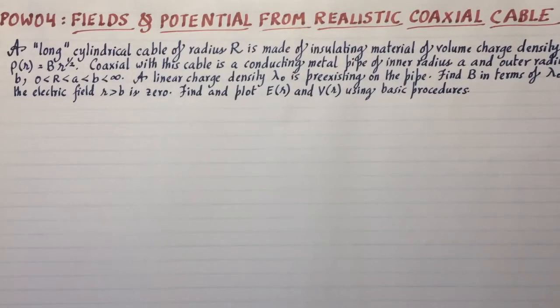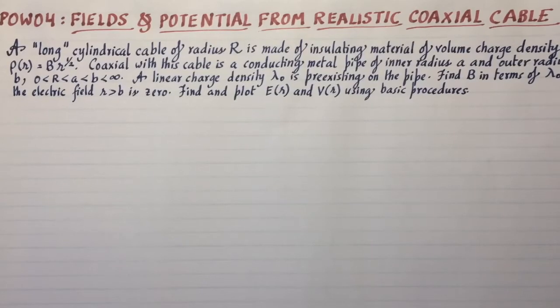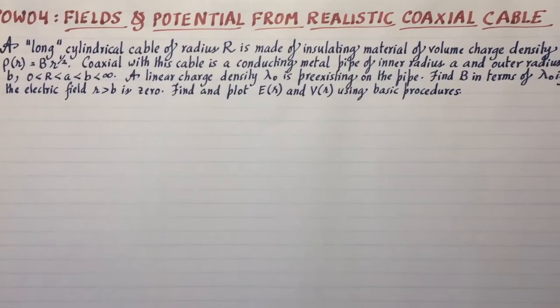And the surrounding coaxial portion, which is a conducting metal pipe, has got an inner radius A and an outer radius B.